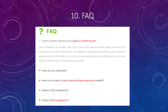Number ten: frequently asked questions. You want to have a FAQ section on your home page that does two things. First, it answers the most frequent questions people ask about your products and services — this gives you a leg up on the competition because many competitors don't have FAQs on their site. Second, FAQs set you up as an authority on your subject matter and improve your SEO by including keywords you're trying to rank for.